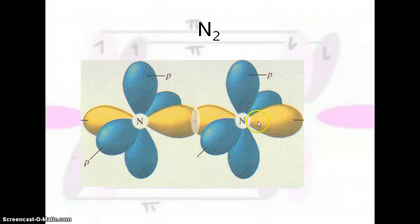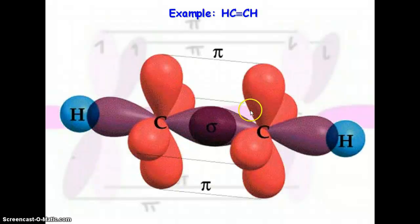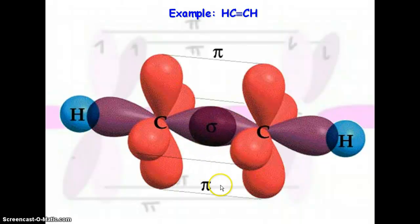Here's a picture of it all together: the sp hybridized orbitals are sigma bonding, and then we have a pi bond between these and a pi bond between those — ending up with two pi bonds. Another example is C2H2, which again has two pi bonds and one sigma bond — also a triple bond.